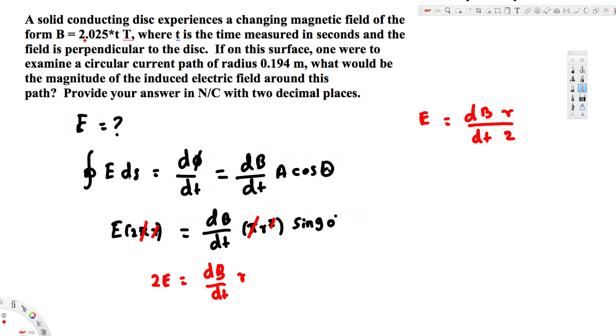If you notice this equation, we have 2.025t, and if we take the derivative of this, this t is going to become 1, so we will get 2.025. And the radius of this circular path is given by 0.194.